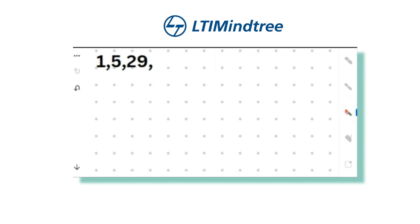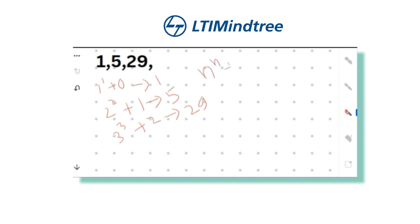Let's check if the n-to-the-power-n pattern applies. We can write 1 as 1 to the power 1 plus 0, which is 1. Then 2 to the power 2 plus 1 is 4 plus 1, that is 5. And 3 to the power 3 plus 2 is 27 plus 2, that is 29. So this series is following the pattern n^n plus (n-1), starting from n=1.